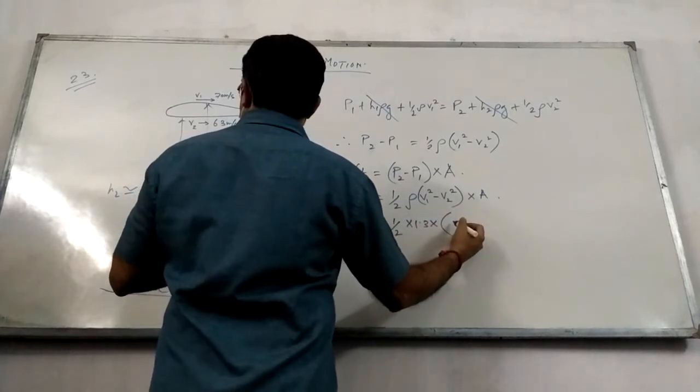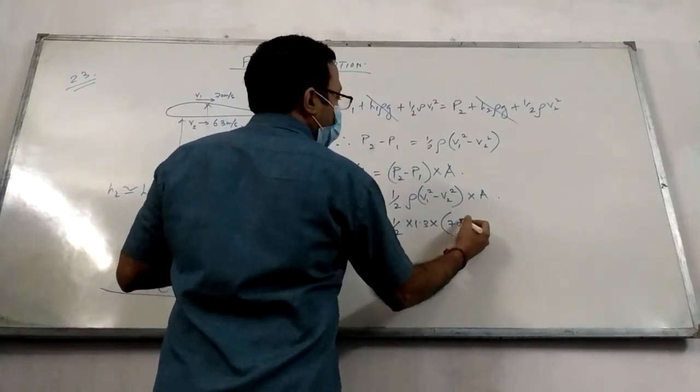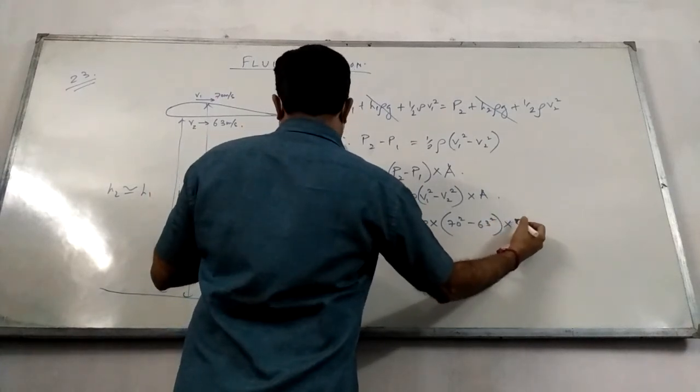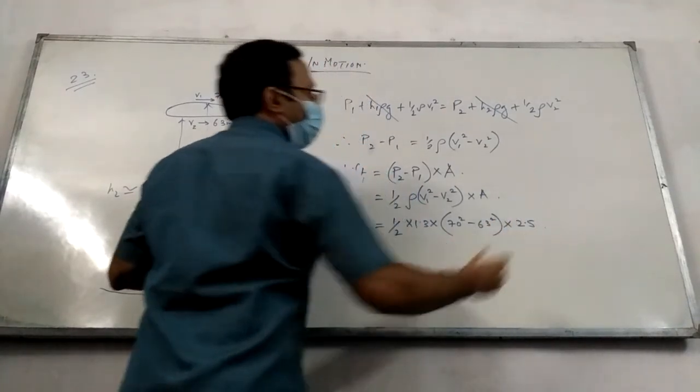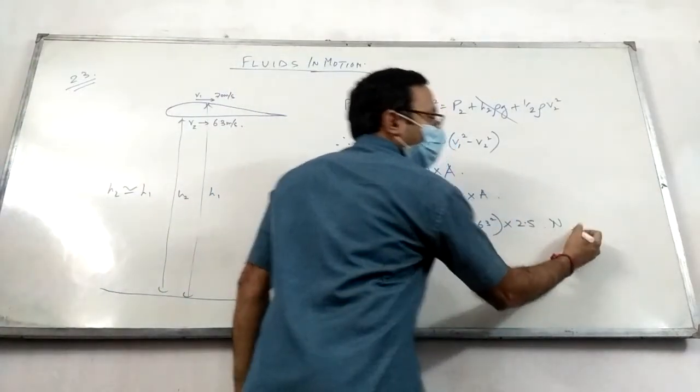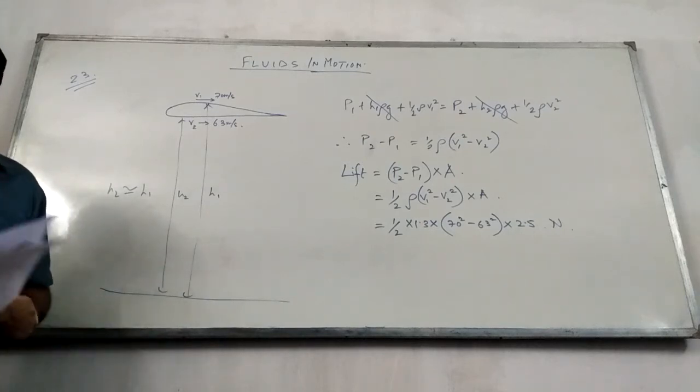So putting in the values: half times 1.3 times 70 square minus 63 square times the area of the plane 2.5 meter square, and of course the answer will come in Newtons, because it's force.